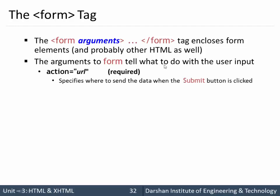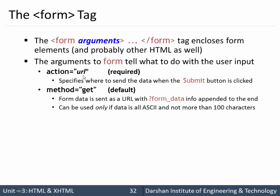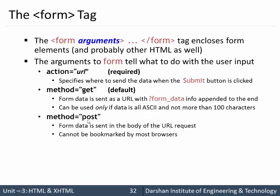The form argument tells the browser how and what we want to transfer. For example, we can specify the action — where we want to send the data — and the method using which we want to send the data. There are two main options: GET and POST. GET is the default method; if we don't specify a method, the data will be sent using GET.